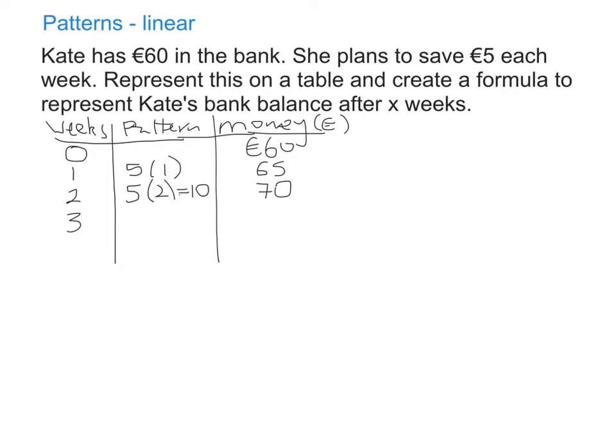If I go to week three, I'm saving 5 euro now for three weeks which gives me 15 euro. So therefore I have 75. The other way of thinking about it is that each week we're just adding 5 on. But writing it out like that into our little pattern will be helpful for the next part of the question.